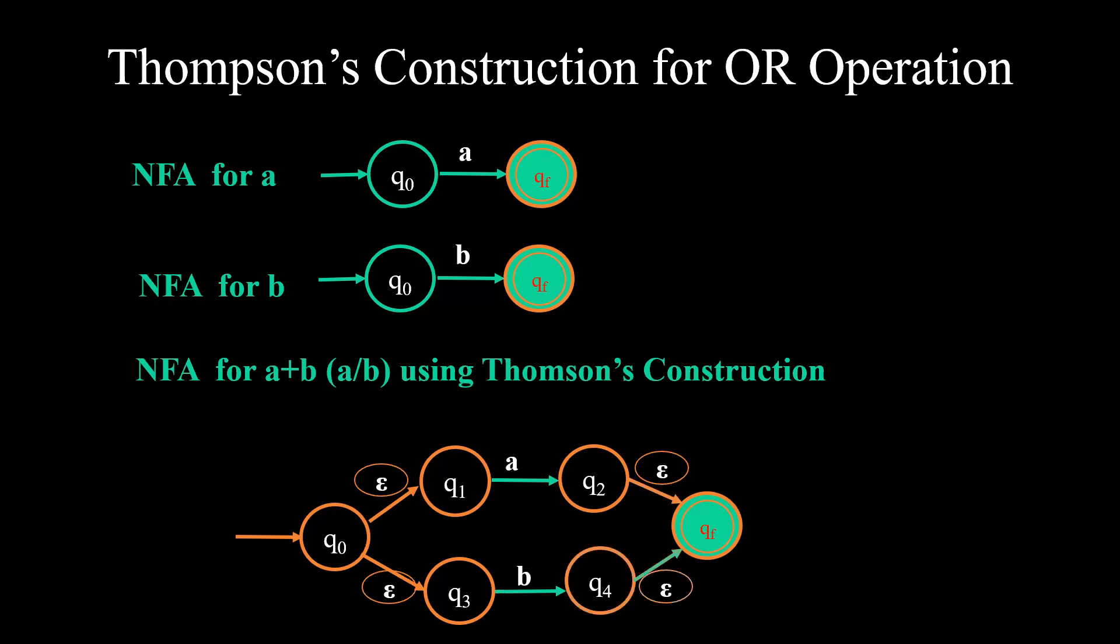Please remember whenever we have an OR move, there are always compulsorily 4 epsilon moves. This is important as we had in star operation. 4 epsilon moves compulsory for star. 4 epsilon moves compulsory for OR in Thompson's construction.